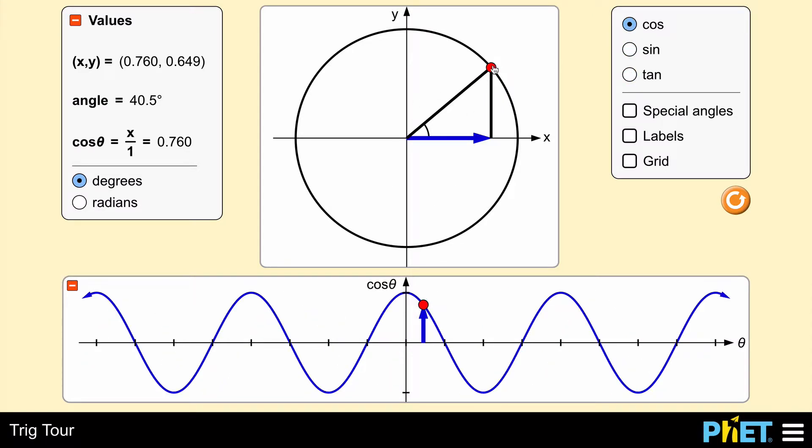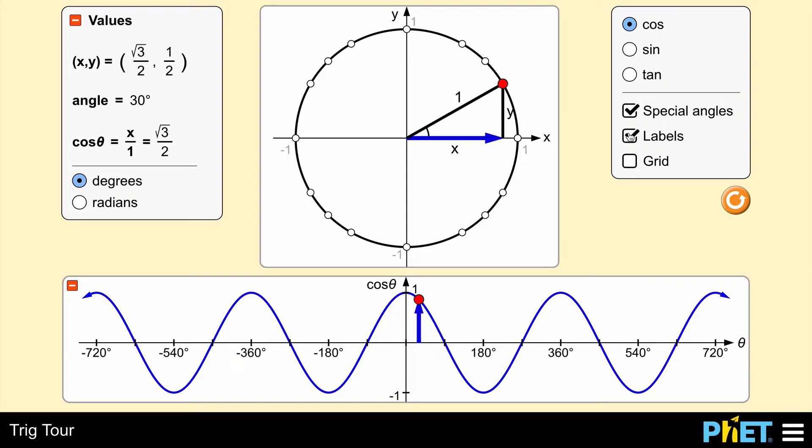To help us figure out the angles on the unit circle and the measures, the ordered pairs, we're going to select special angles. If you want to use the labels, it's showing you that this is talking about the x value and the y value, and then it has a radius of 1 because it's a unit circle.